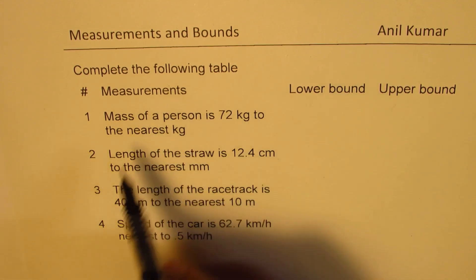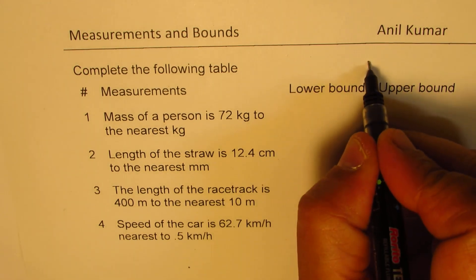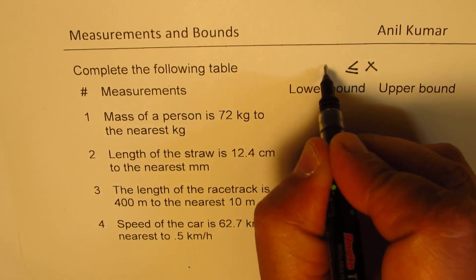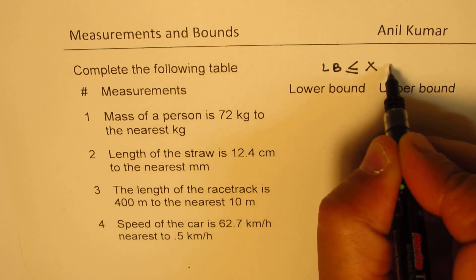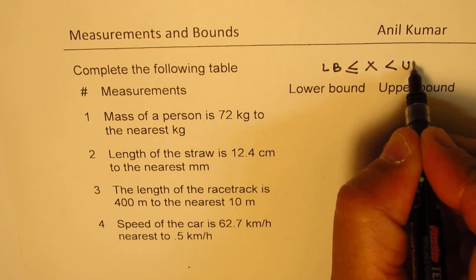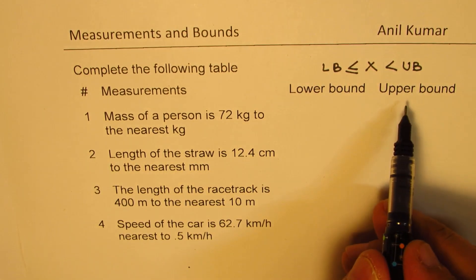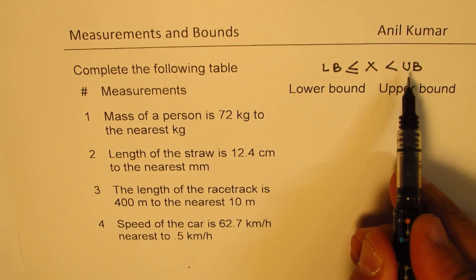So normally, whenever you write this answer, we are writing that x is greater than or equal to the lower bound, but it is less than the upper bound. So the upper bound value we approach to, but that is not included.